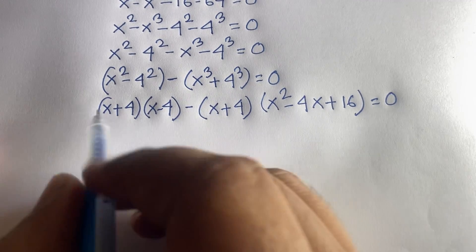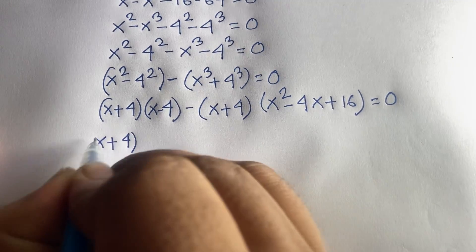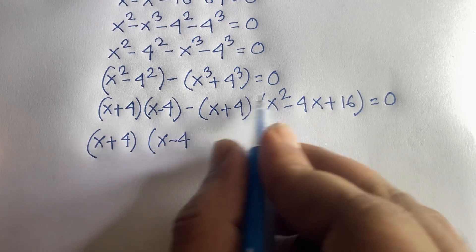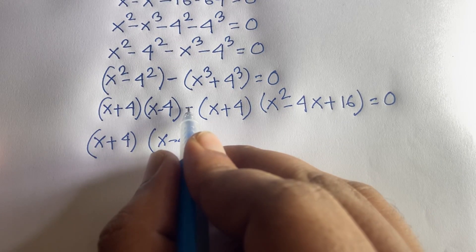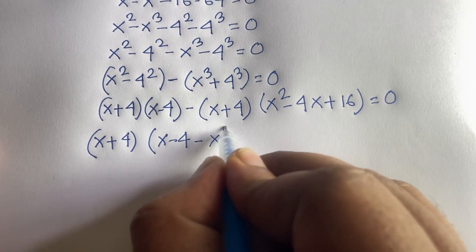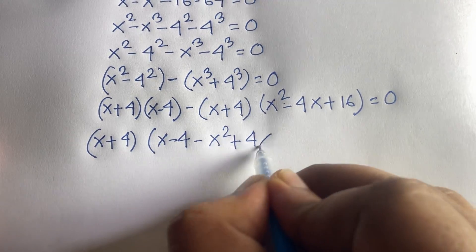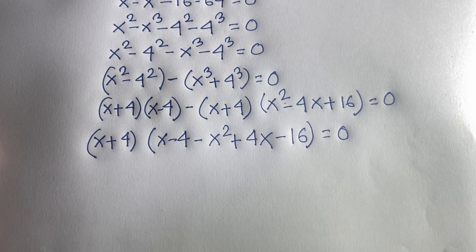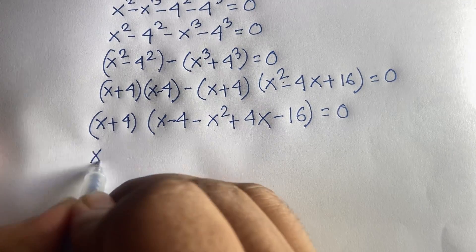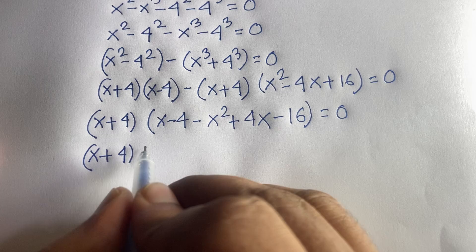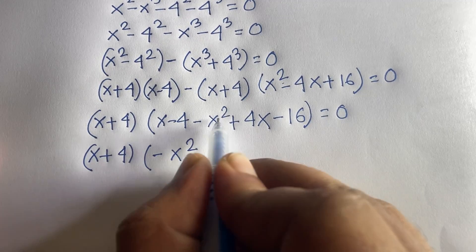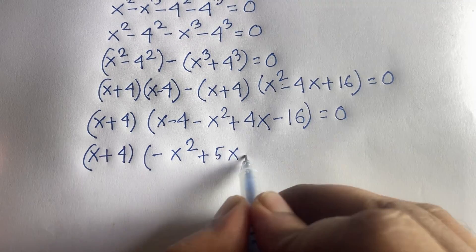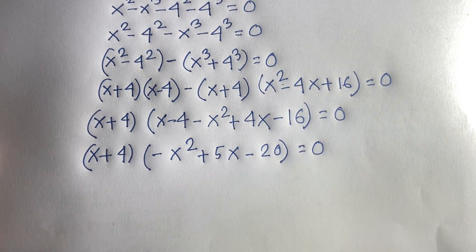I can see that (x+4) is a common factor. Dividing through, the first part gives (x−4) and the second part, with the negative sign, gives minus x squared plus 4x minus 16. Combining like terms: 4x plus x gives 5x, and minus 16 minus 4 gives minus 20.